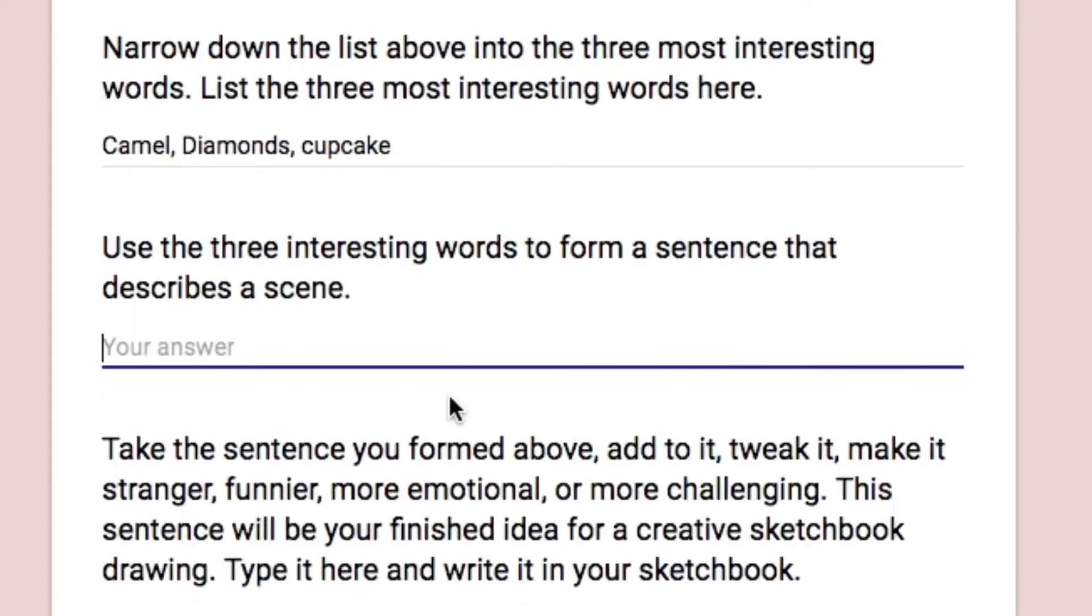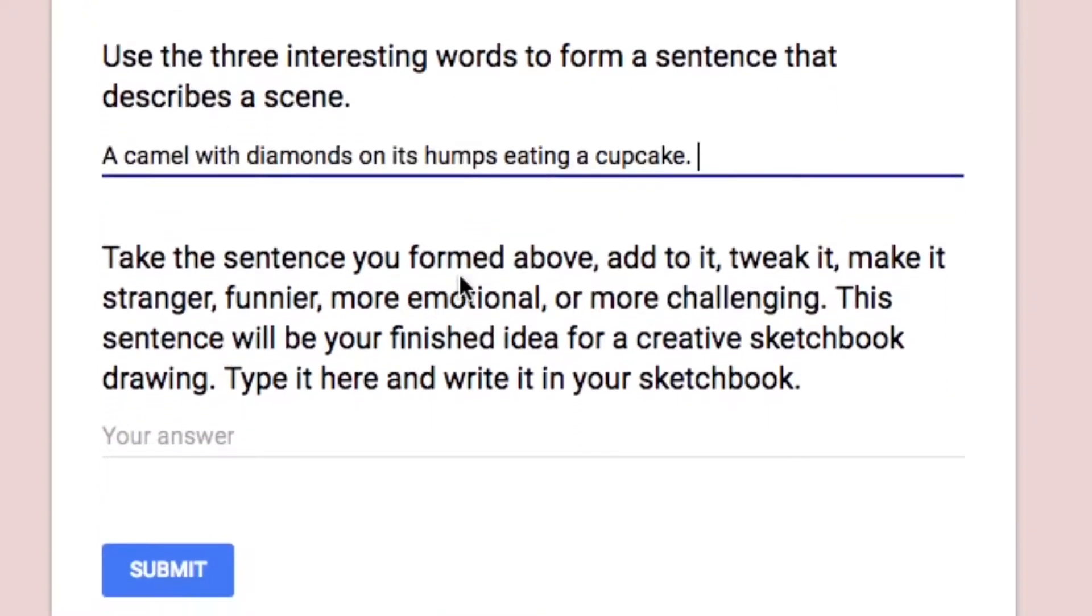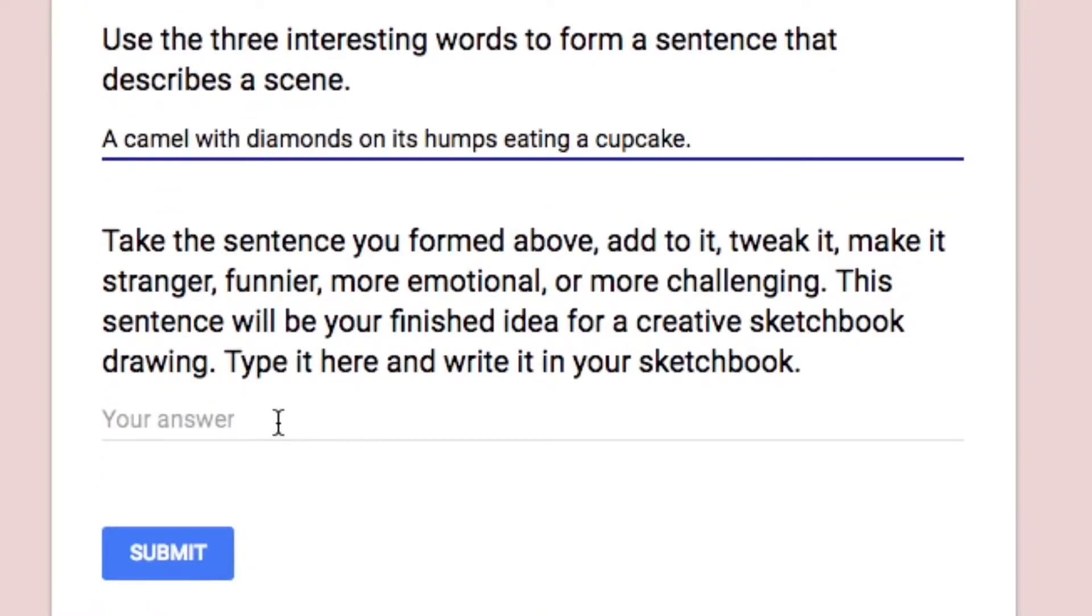I chose camel, diamonds, and cupcake. Now we're going to take those three words and turn them into an actual scene that we could draw. So I'm going to start with a camel and I'm going to have it doing something with the diamonds. For example, the diamonds could be resting on its humps, right? A camel with diamonds on its humps. And let's have that camel doing something and we want to have the cupcake. So a camel with diamonds on its humps eating a cupcake. Now that's a pretty idea for a sketch.